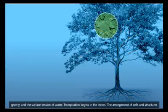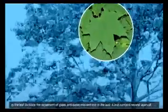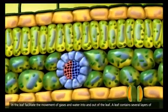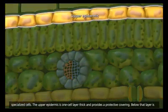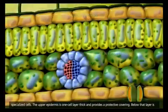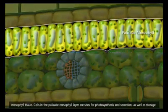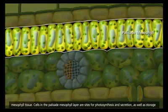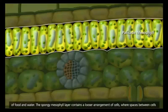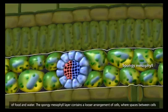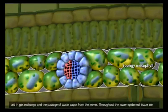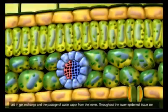Transpiration begins in the leaves. The arrangement of cells and structures in the leaf facilitate the movement of gases and water into and out of the leaf. A leaf contains several layers of specialized cells. The upper epidermis is one cell layer thick and provides a protective covering. Below that layer is mesophyll tissue. Cells in the palisade mesophyll layer are sites for photosynthesis and secretion, as well as storage of food and water. The spongy mesophyll layer contains a looser arrangement of cells, where spaces between cells aid in gas exchange and the passage of water vapor from the leaves.